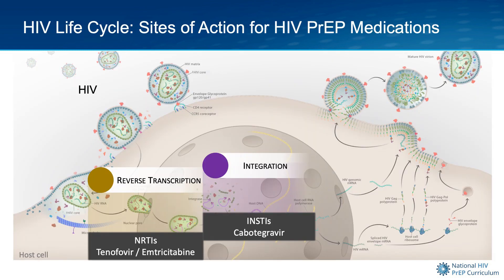There is one important final point regarding how these HIV PrEP medications work. As shown in this diagram, these medications do not actually prevent every cell from getting infected with HIV. But if either of these critical steps in the HIV life cycle is blocked, the formation of new virions does not occur, which prevents HIV from establishing a full-on infection in the human tissues.